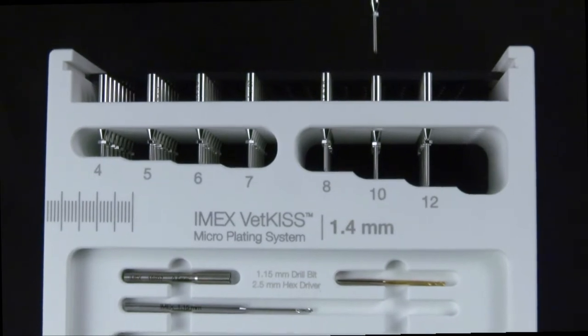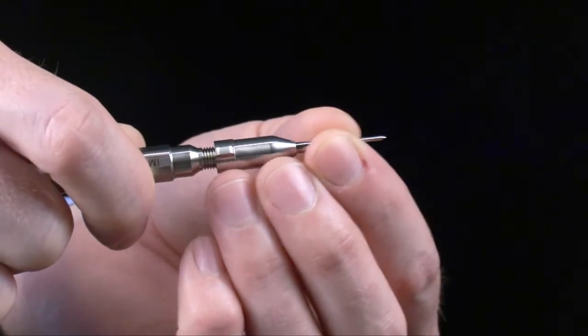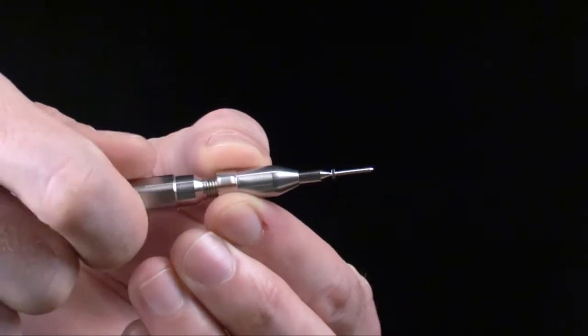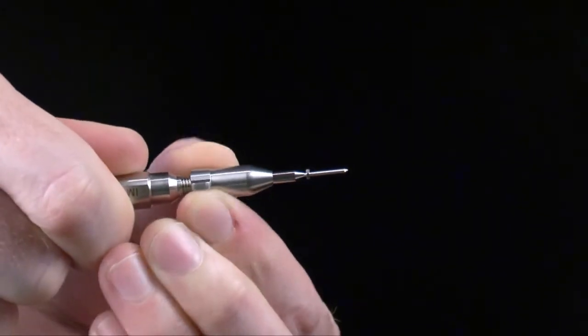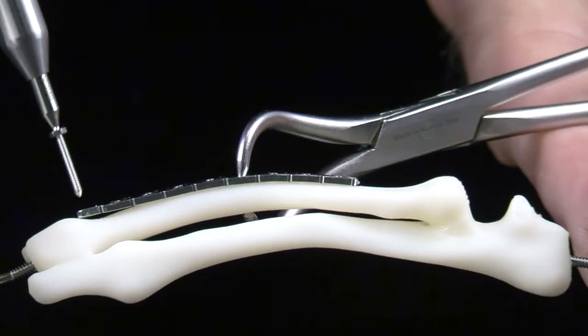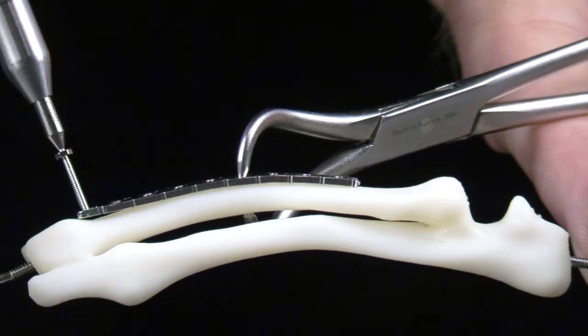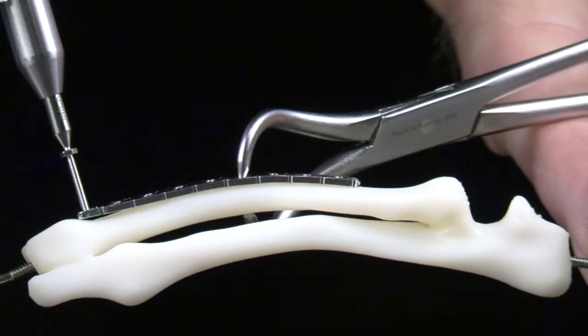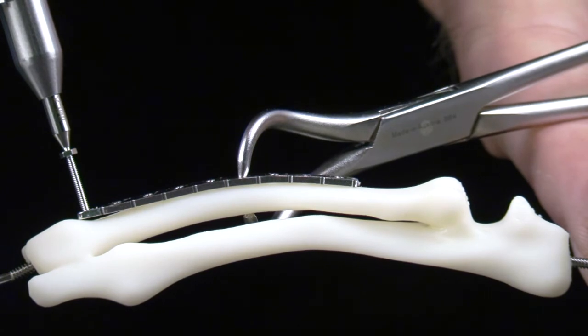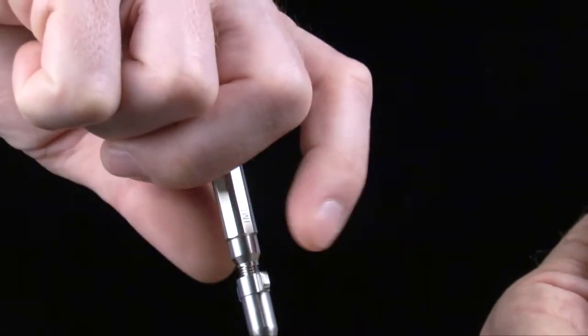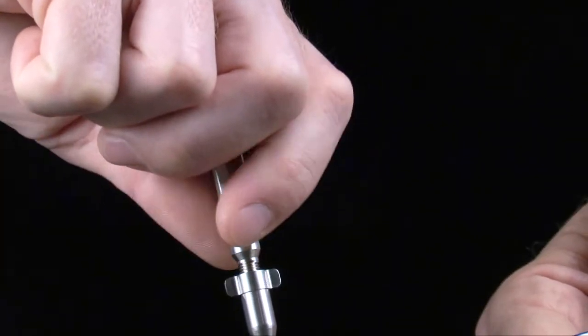Select the proper length screw and load it into the finger driver. Align the screw and finger driver perpendicular to the plate surface at the plate hole being filled. This is visually verified just as was the proper orientation of the drill bit. Thread the VetKiss screw through the bone plate and into the bone.